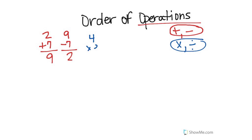Let's do an example with multiplication. 4 times 3 — your answer is 12. Well what if you want to check your answer? You check it by using the opposite operation. What's the opposite of multiplication? Division. 12 divided by 4 — my answer is 3. And that's why I call them the homies, because they have each other's back.